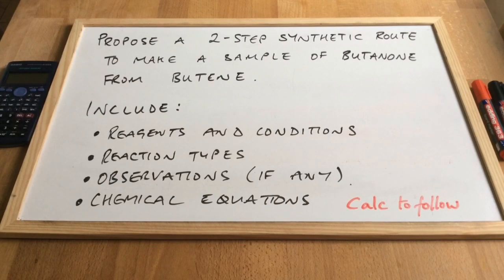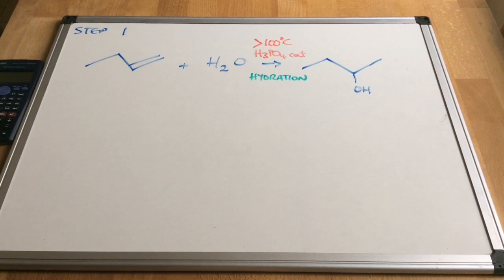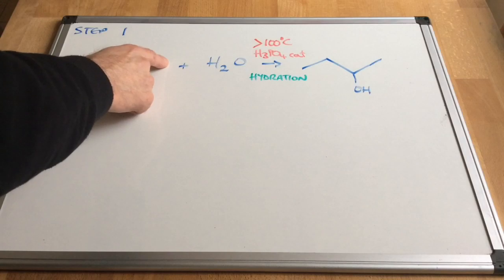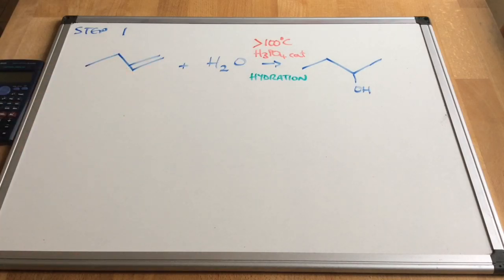So there's step one on the board: butane plus H2O making butan-2-ol. It's got to be butan-2-ol because ultimately we're going to turn this alcohol into a ketone, so we need to make the secondary alcohol. The H of the water can either go here or here; we want the H to go there so that the OH goes here and creates the secondary alcohol. This is an example of a hydration reaction and the water must be in its steam form, so therefore the temperature must be over a hundred degrees C and we need a phosphoric acid catalyst.